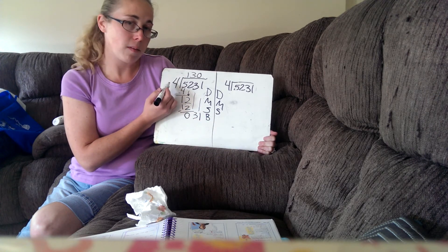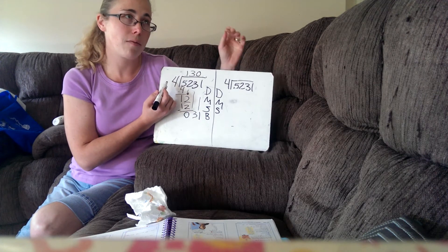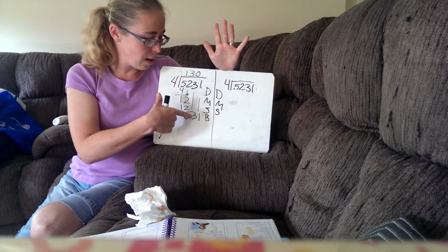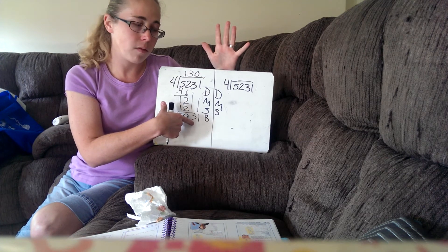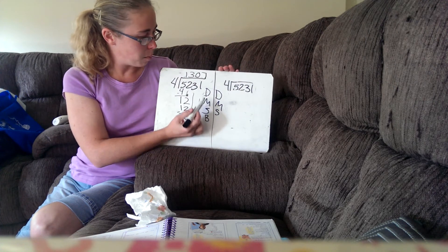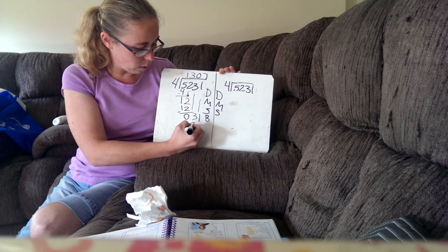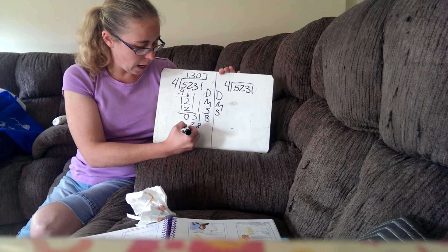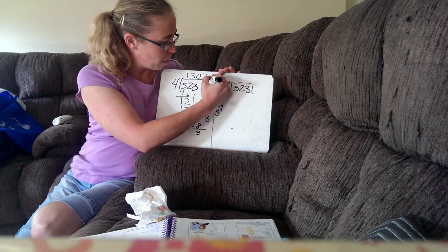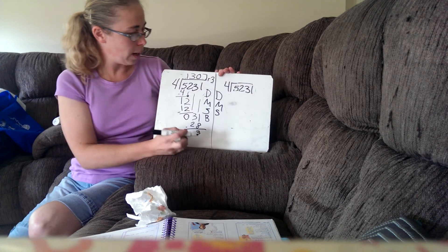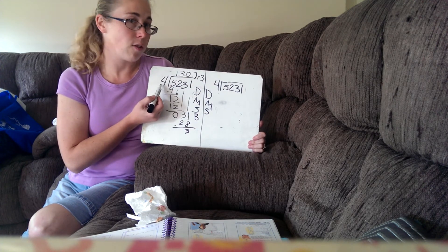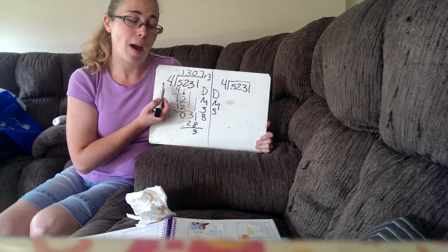Now, can 31 be divided by four? Sure, let's count by fours: four, eight, twelve, sixteen, twenty, twenty-four, twenty-eight. That's the closest I can get to 31 without going over. So I know it can go in seven times. Now I multiply: seven times four equals twenty-eight. And now I subtract, and the answer is three — so that gives me a remainder of three. Always double-check and make sure your remainder is smaller than your divisor. Otherwise, you did something wrong and you need to go back and try your math again.